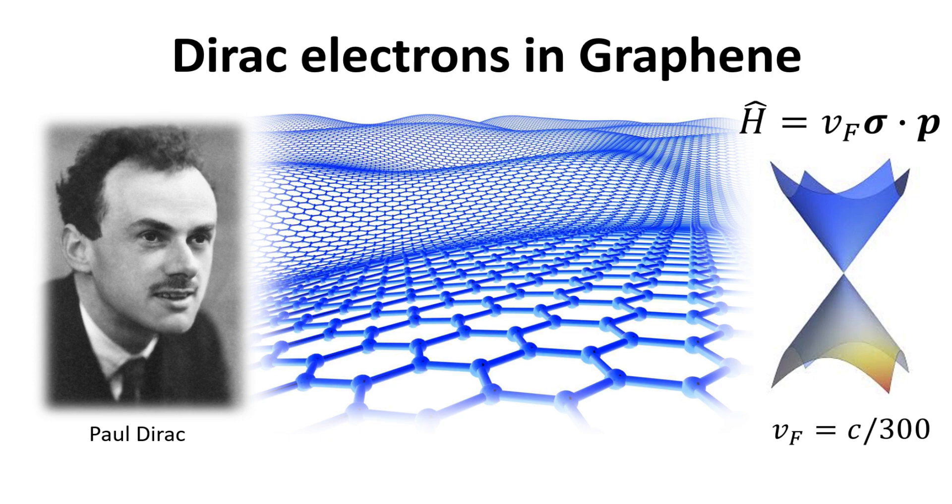Hence the nature of these states will dictate the conduction properties of this two-dimensional material. In this video we will show that electrons in graphene obey a two-dimensional version of the famous Dirac equation, a relativistic wave equation for spin-half fermions proposed by Paul Dirac.